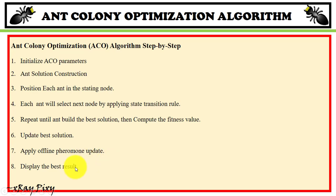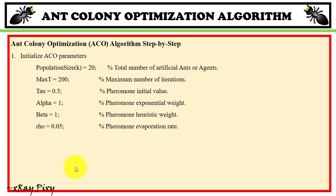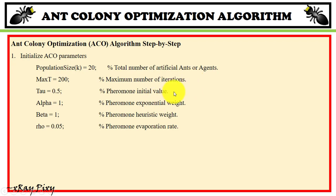Step 1 — parameter initialization: initialize all important parameters such as population size (total number of artificial ants, e.g., 20), maximum number of iterations, pheromone initial value (since there is no pheromone in reality, artificial pheromone values are used), pheromone exponential weight, pheromone heuristic weight, and pheromone evaporation rate.